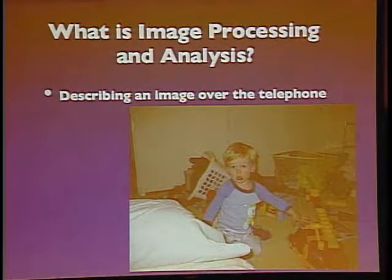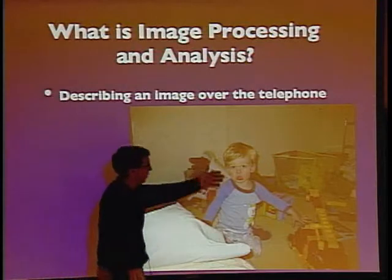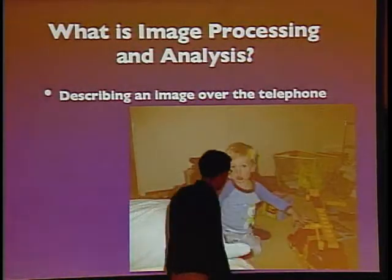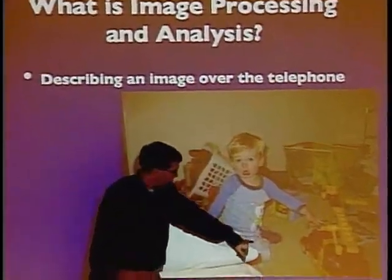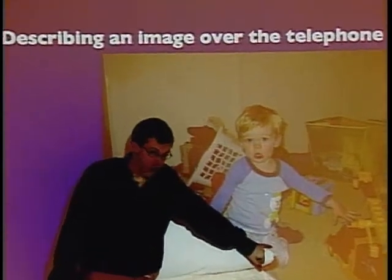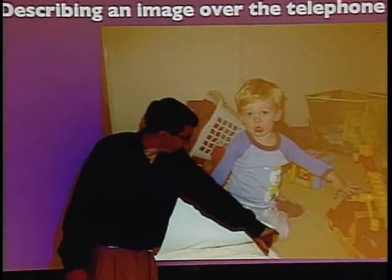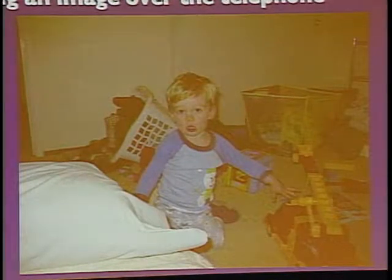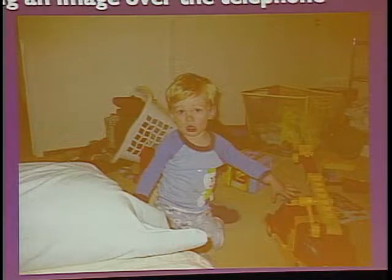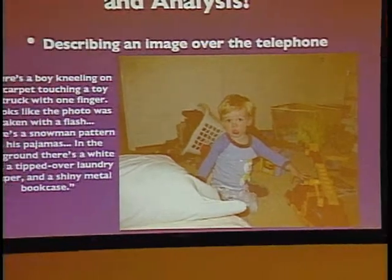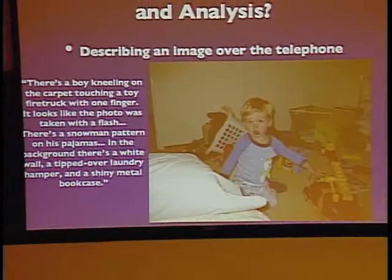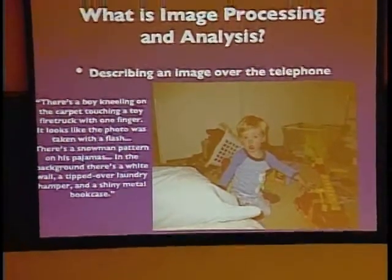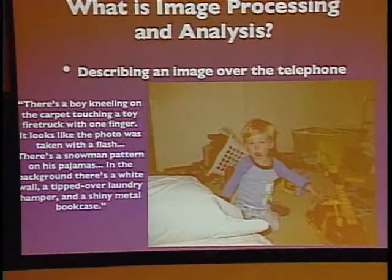You may also notice in the background a dark gray thing with one really bright spot on it — that's what's known as a specularity, which is a visual cue that tells you something is made out of metal in a photograph. There's a dumped-over laundry hamper and a bunch of toys. If you look on his pants, you may notice little snowmen in a repeated pattern — he's basically wearing snowman pajamas.